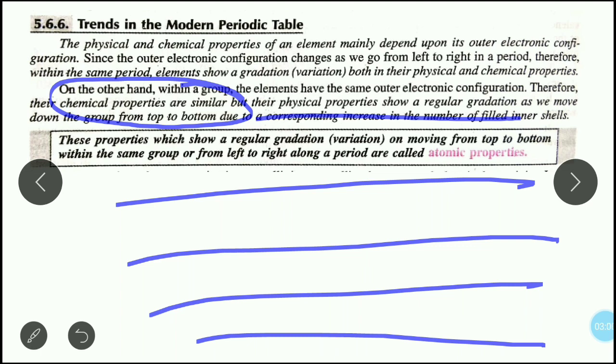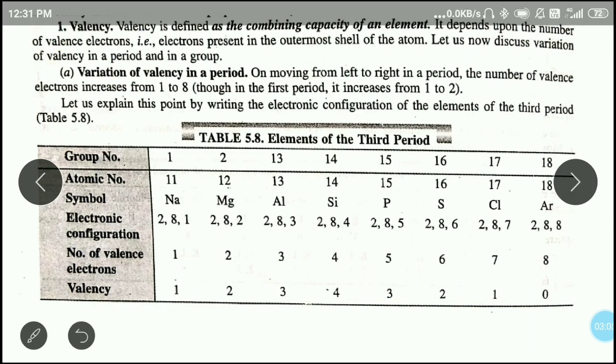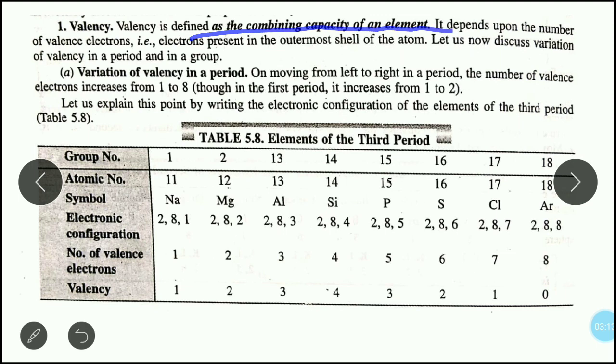The first variation is valency. Let's start understanding valency. What is the trend in the periodic table? We have already discussed that valency is the combining capacity of an element. It depends upon the number of valence electrons or electrons present in the outermost shell. Now, the variation - how is it? Let's see.